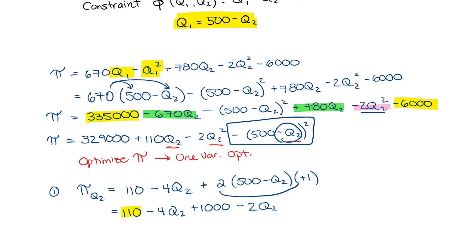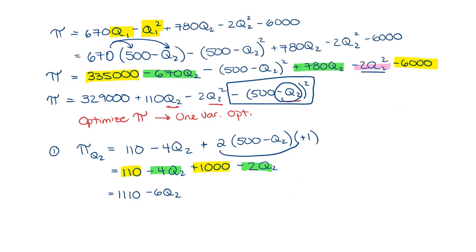I have 110 and 1,000, giving me 1,110. And I have minus 4Q2 and minus 2Q2, giving me minus 6Q2. So that's my first derivative.